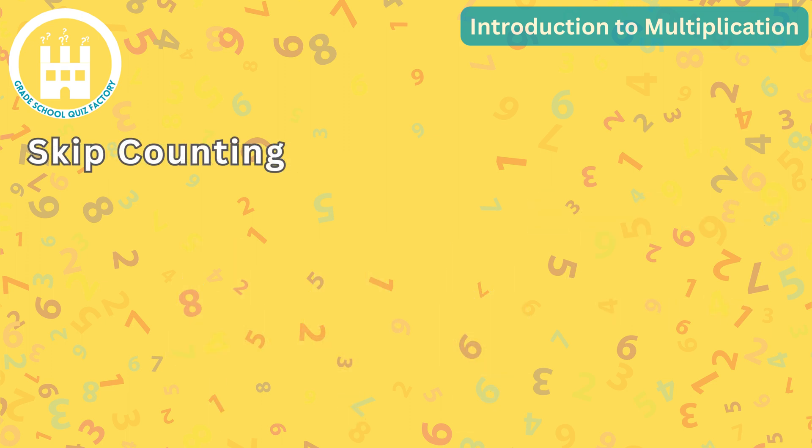Another useful technique is skip counting. This involves counting in groups instead of counting one by one. Let's say we want to find 5 times 3. Instead of counting 1, 2, 3, 4, 5 three times,